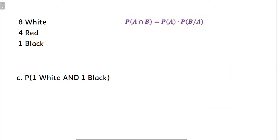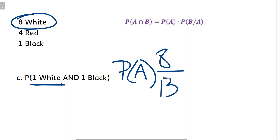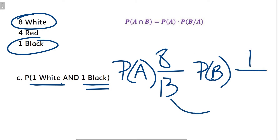The last one, part C, wants one white and then one black. Because we're not replacing it, it doesn't matter if they asked us to pull them both out at the same time or pull one out and then not replace it and then pull another one. So we pull out one white. The probability that we get a white marble is eight possible white marbles out of thirteen total. And the probability of the second thing happening, it's a black marble, there's only one, so the probability is one. But there's not thirteen anymore, there is twelve because we've taken out that white marble.